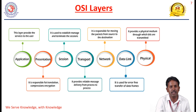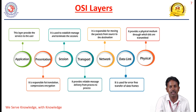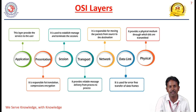Each layer has specific functionalities. The physical layer provides a physical medium through which bits are transmitted. The data link layer handles node-to-node delivery and error-free transfer of data frames. The network layer is responsible for moving packets from source to destination. The transport layer provides reliable message delivery from process to process. The session layer is used for establishing, managing, and terminating sessions. The presentation layer handles translation, compression, and encryption. The application layer provides services used by the user.